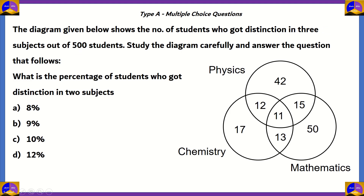Next question. The diagram below shows the number of students who got distinction in 3 subjects out of 500 students. Study the diagram carefully and answer: what is the percentage of students who got distinction in exactly 2 subjects? The options are 8%, 9%, 10%, and 12%. We will assume they are asking for exactly 2 subjects.